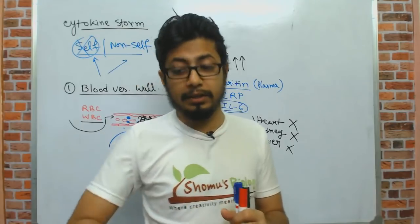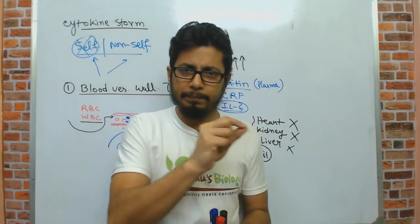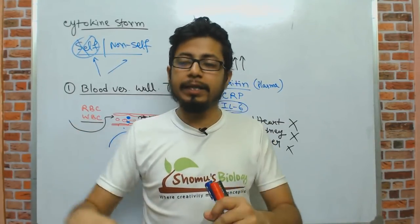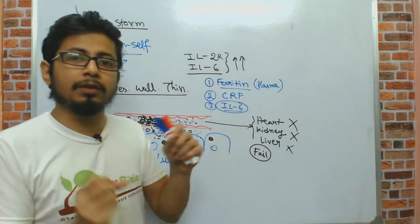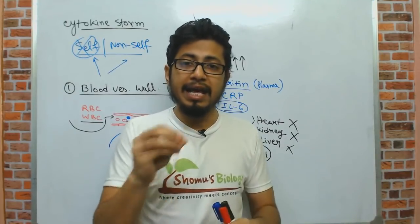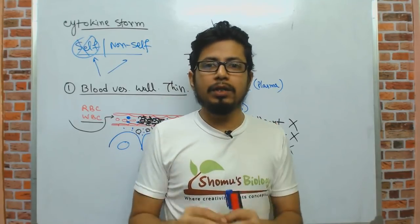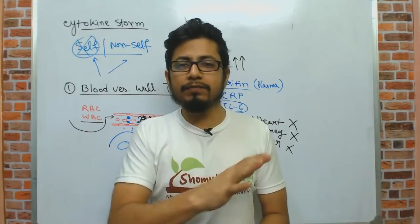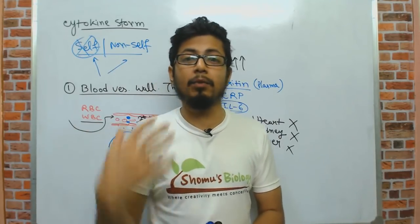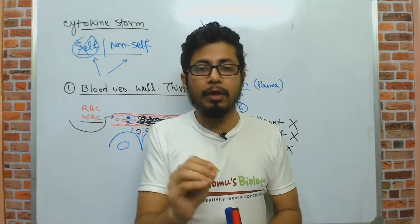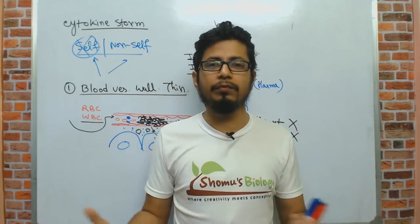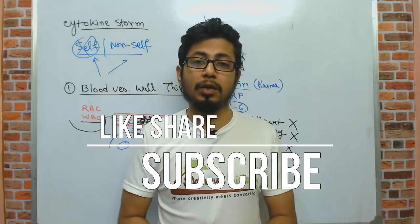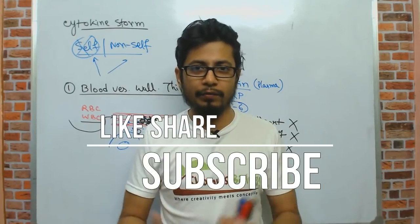Cytokine storm is associated with many deaths. When doctors write death certificates citing liver failure, heart failure, or kidney failure as comorbidities, those organ failures may actually be a result of cytokine storm. The certificate may list COVID-19 along with acute heart, liver, or kidney failure — but the underlying cause could be cytokine storm. If you want to learn more about immunology, watch the immune system video series on this channel. Thank you and goodbye.